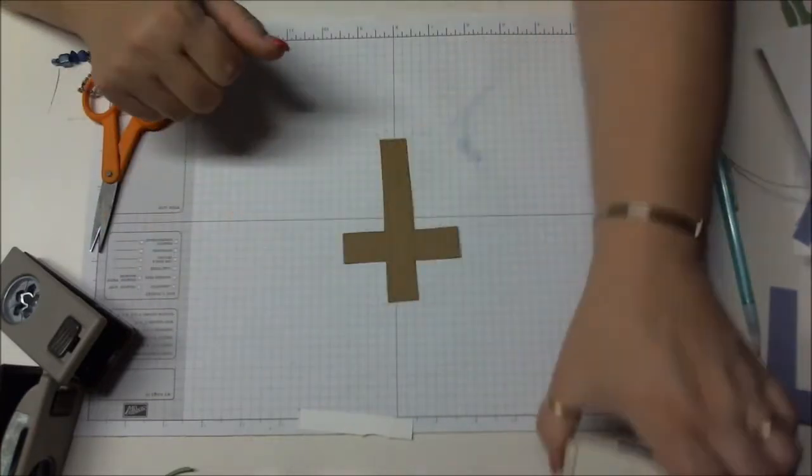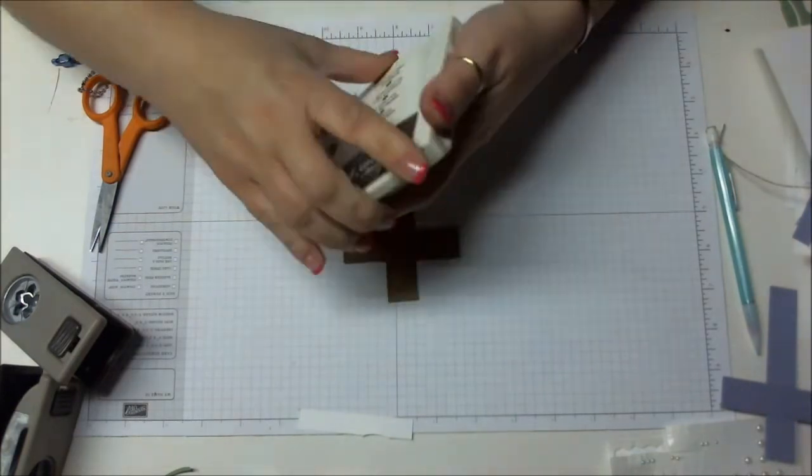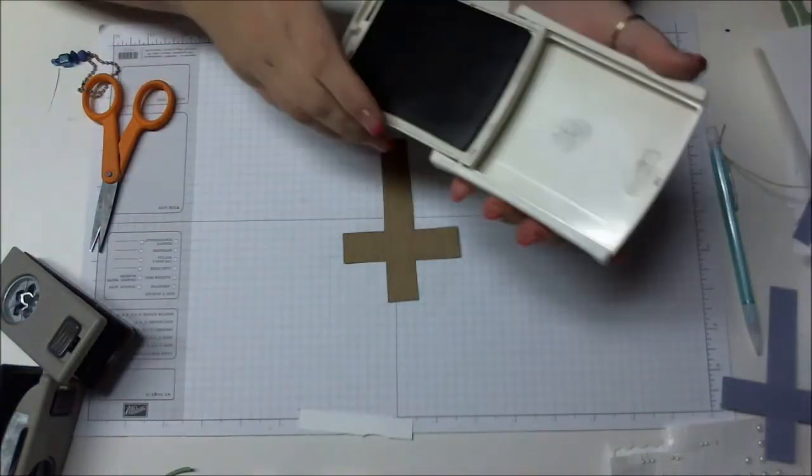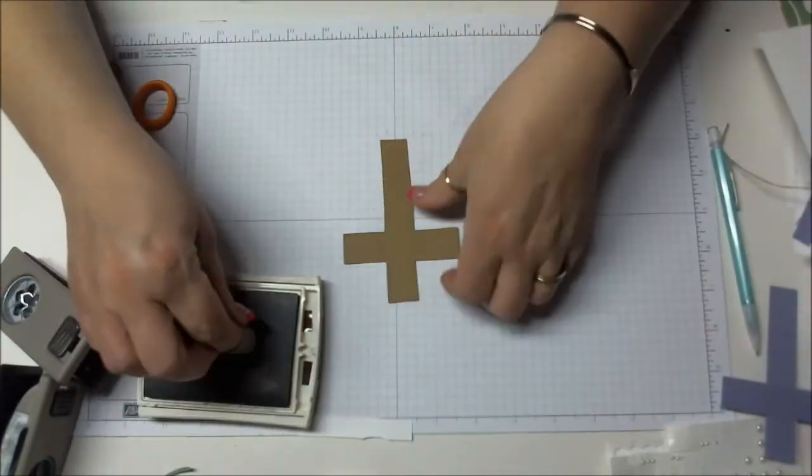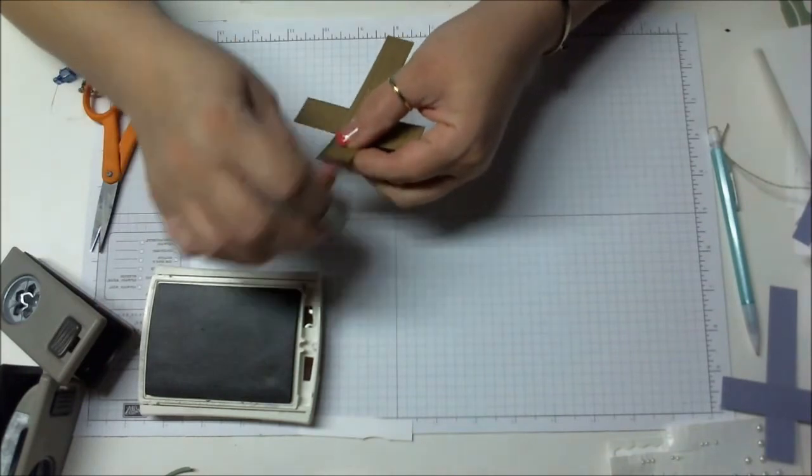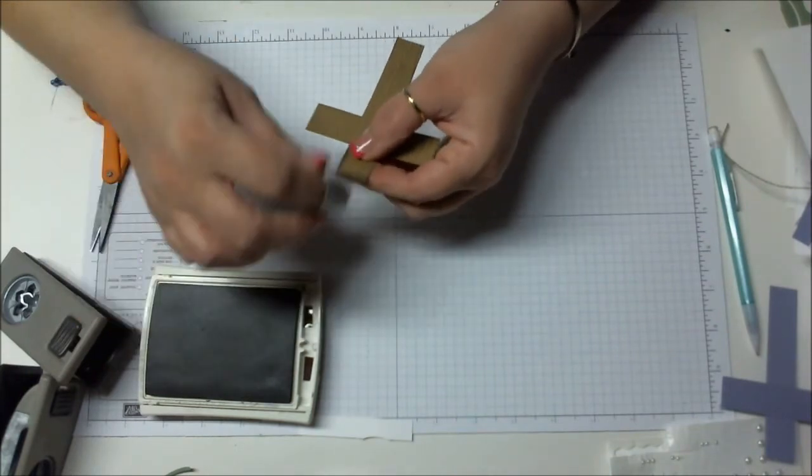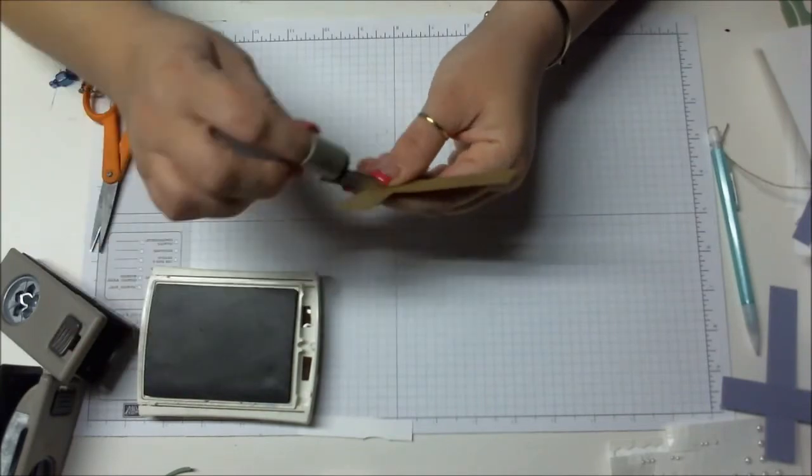Then I took the Early Espresso and a sponge dauber. Just to add some depth to my cross and give it a shadow effect, I sponged all around the cross.